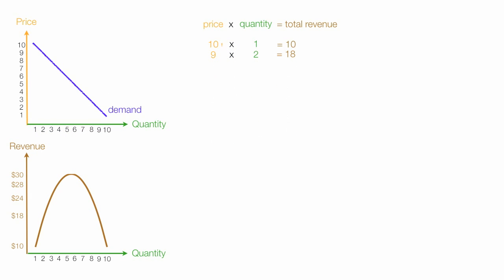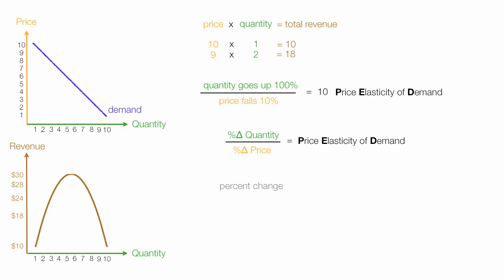I'm going to make some calculations. If price goes down from $10 to $9, price falls 10%. And quantity goes from 1 to 2, quantity goes up 100%. And you divide these out, this equals 10. And this is what's known as price elasticity of demand, which is the percentage change in quantity divided by the percent change in price. This is the formula for price elasticity of demand.